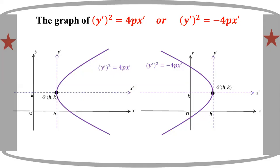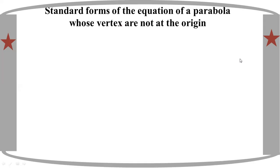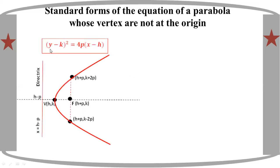The first thing is that the standard position of the parabola is not at the origin. The standard form of the equation of a parabola whose vertex is not at the origin: the equation gives the coordinate system equal to zero. Now, if you want to see y minus k, the whole square is equal to 4p times x minus h.